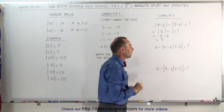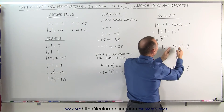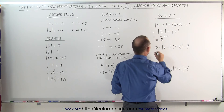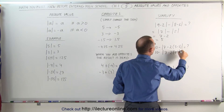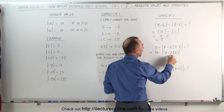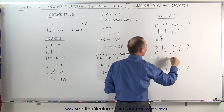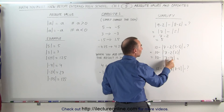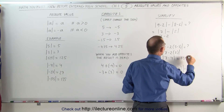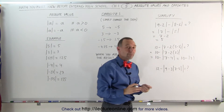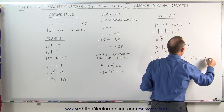Let's try another one. You want to work from the inside out — start with what's inside the parentheses first. That gives you 10 minus the absolute value of 7 minus 2 times 2, where 5 minus 3 equals 2. Then 2 times 2 equals 4, so you have 10 minus the absolute value of 7 minus 4. That's 3. Since 3 is positive, remove the absolute value symbols. This becomes 10 minus 3, which equals 7.